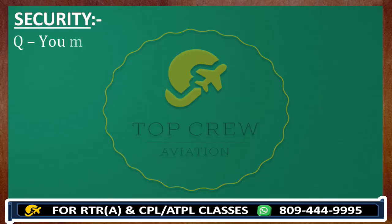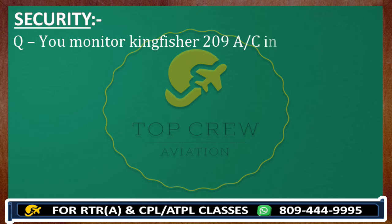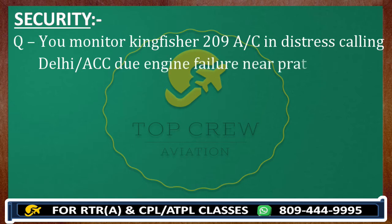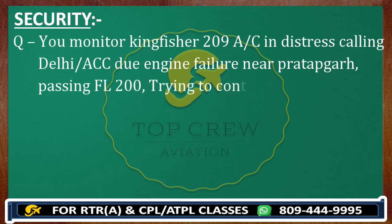For an example: you monitored Kingfisher 209 aircraft is in distress, calling Delhi control due engine failure, near Pratap Ghat, passing flight level 200. Trying to contact ATC but no response.